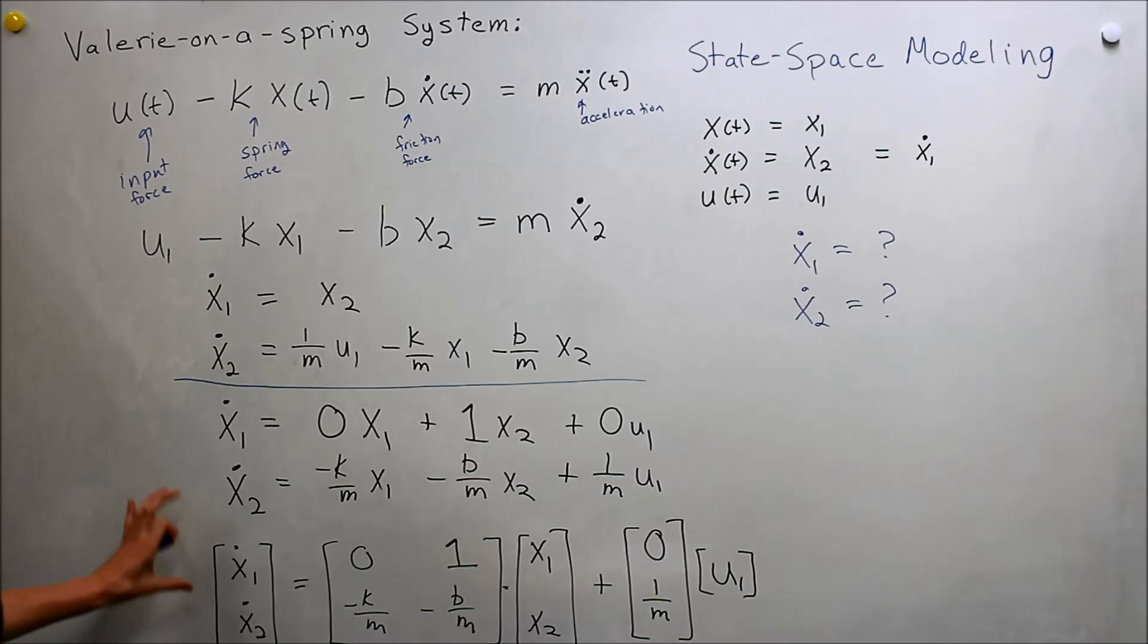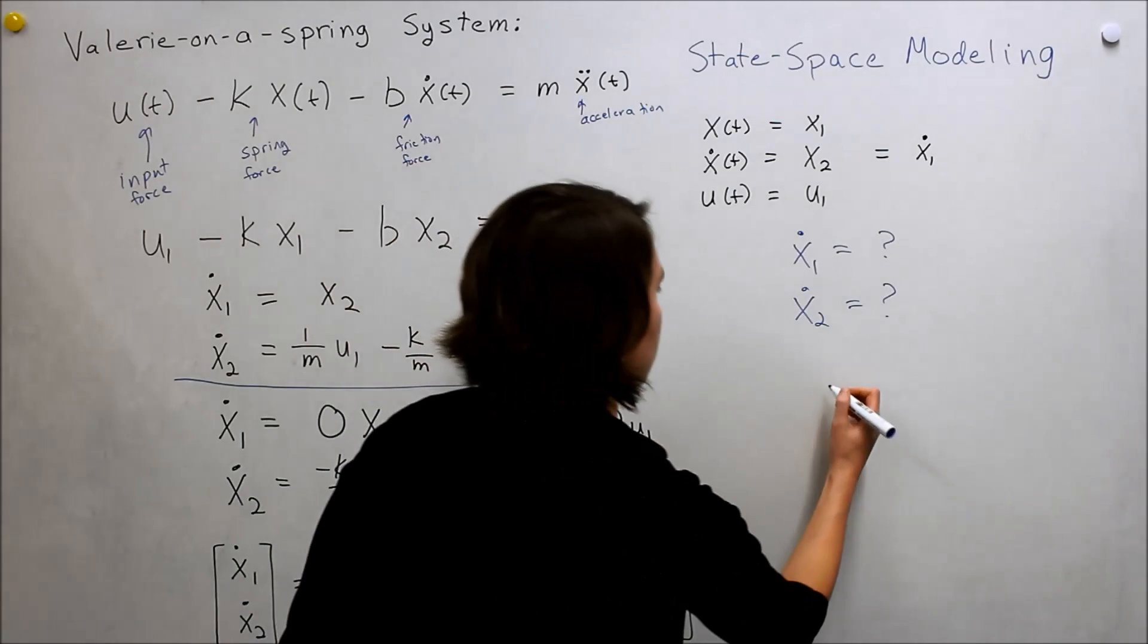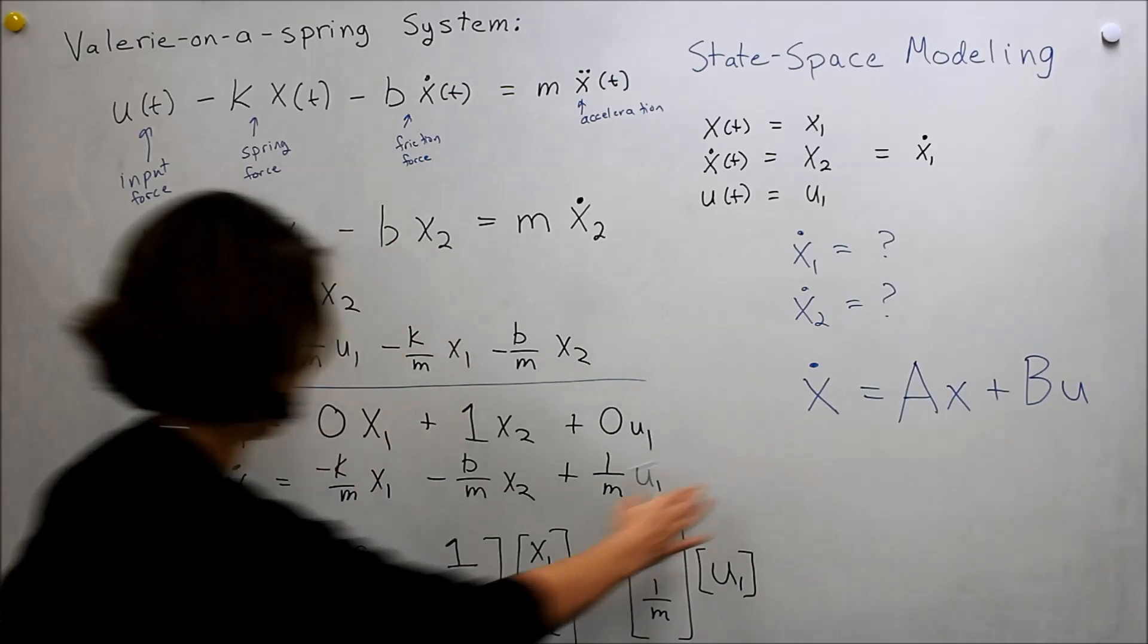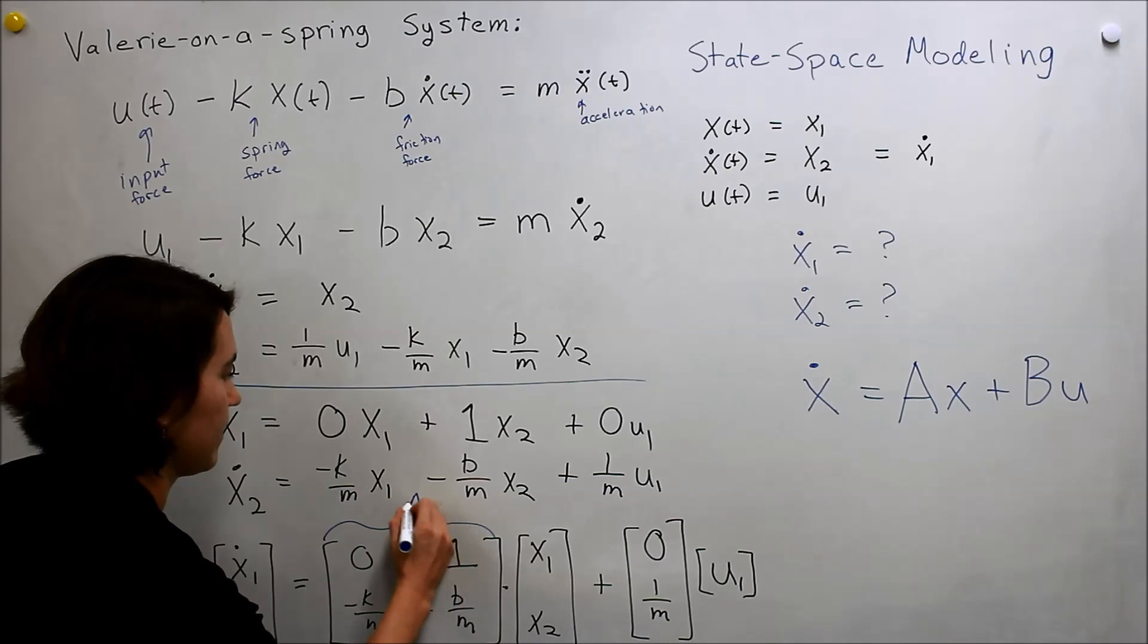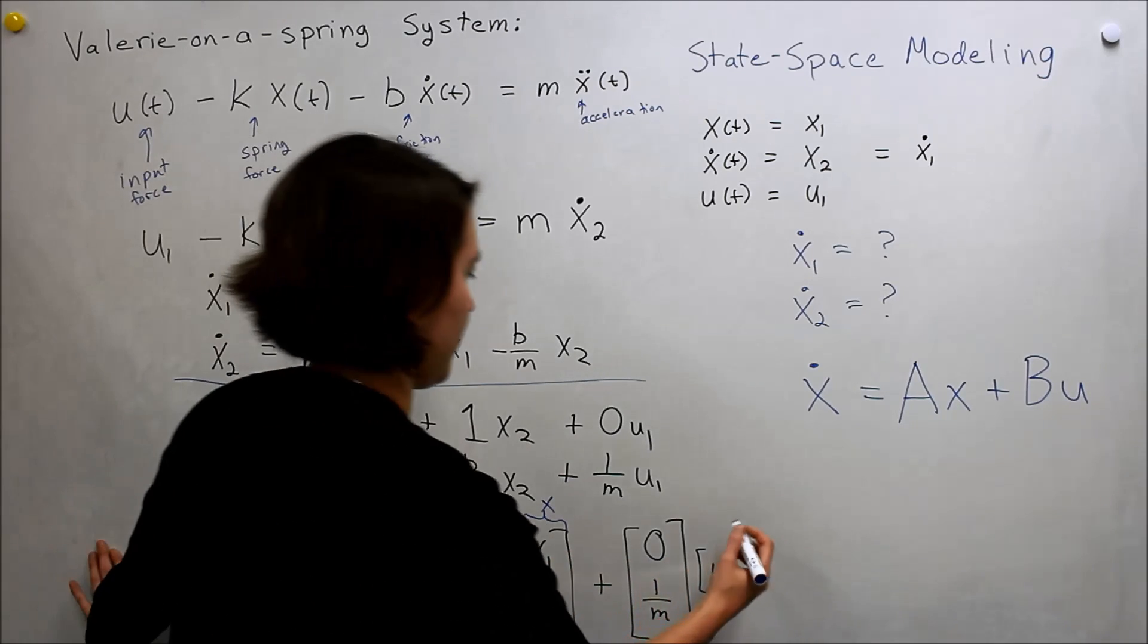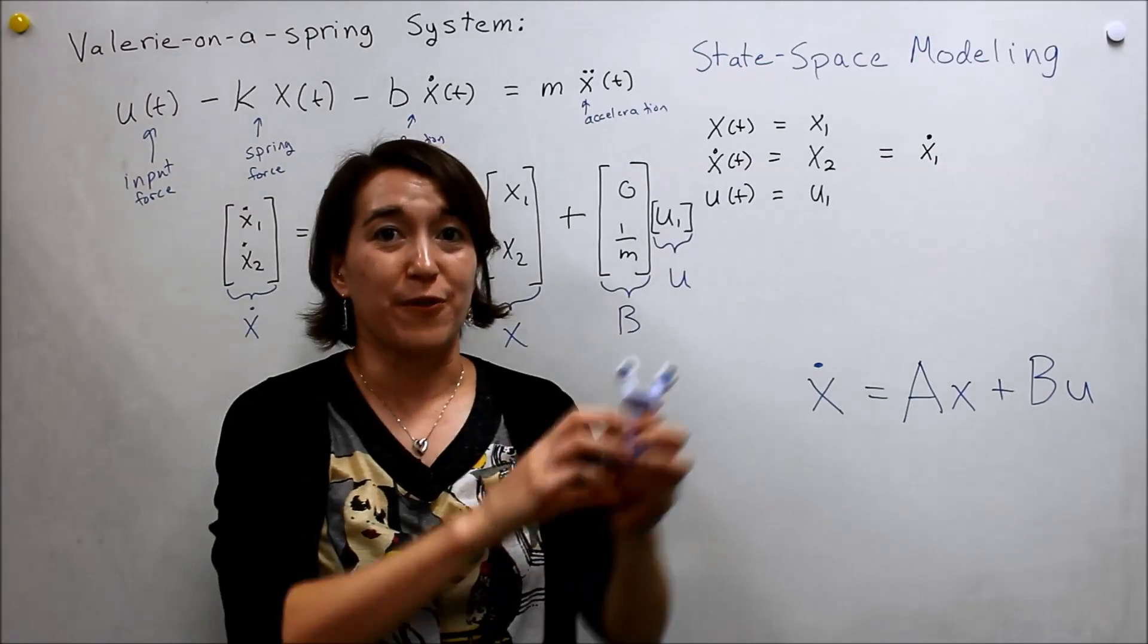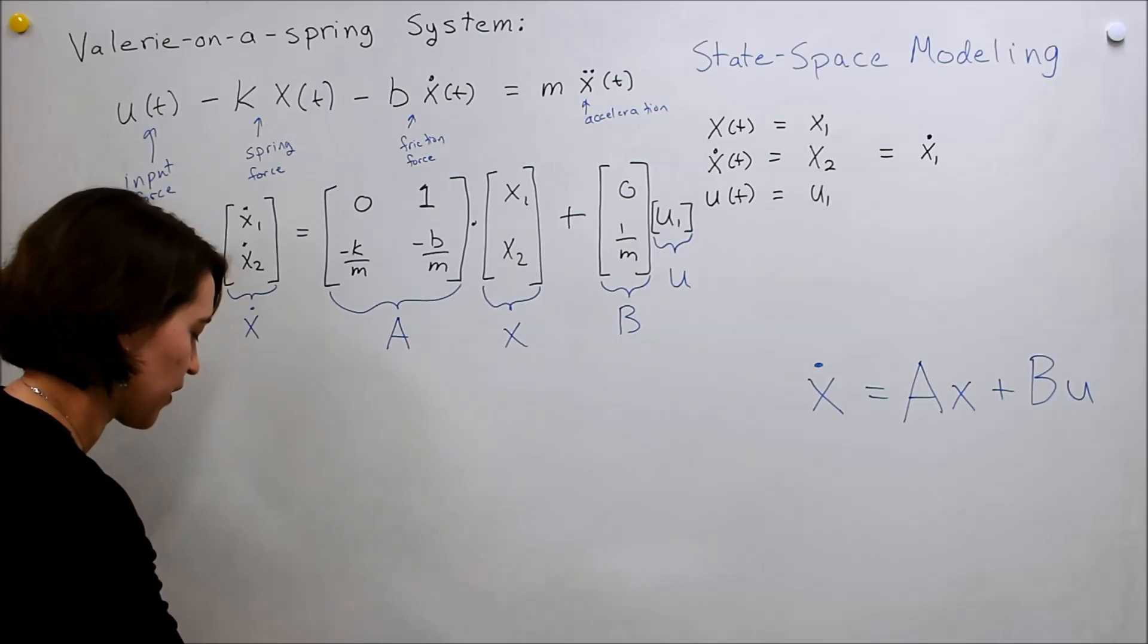So, we've actually modeled our system using matrices. And this is a standard form that we can use for our system. The standard form that we use is ẋ = Ax + Bu. And what we've done essentially is x here is a vector. So we have a vector x1, x2. Those are our states. This is A. This is our ẋ dot. This is B, and u. So this is a standard form for modeling in state space. And then we'll talk about the output next.